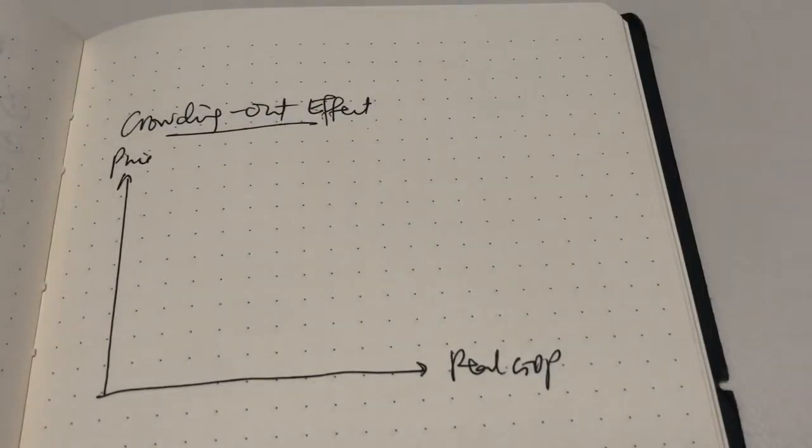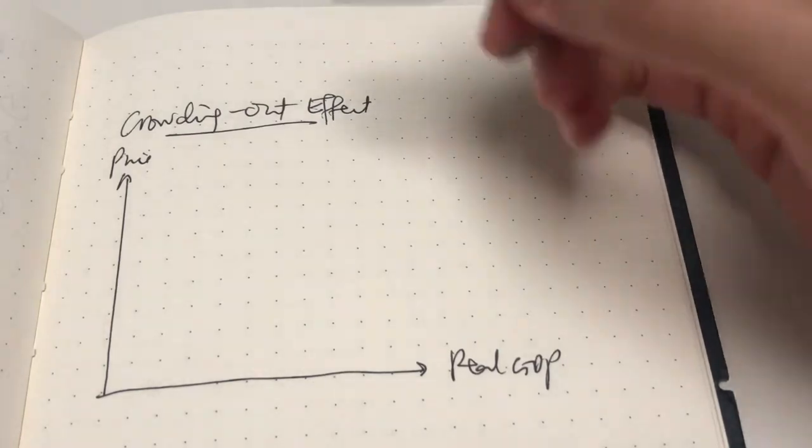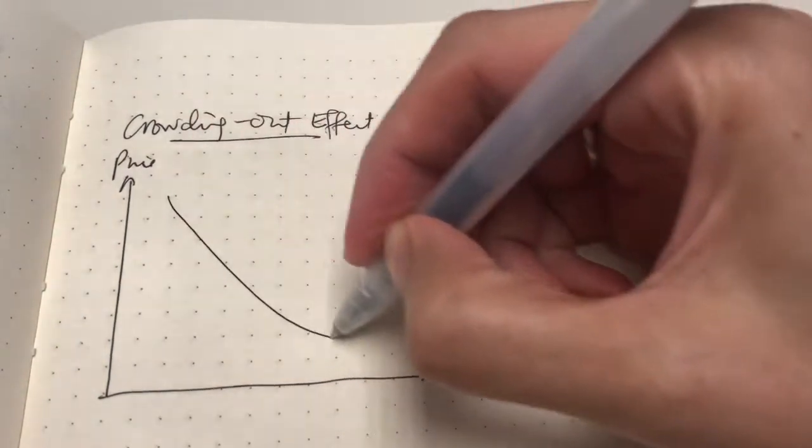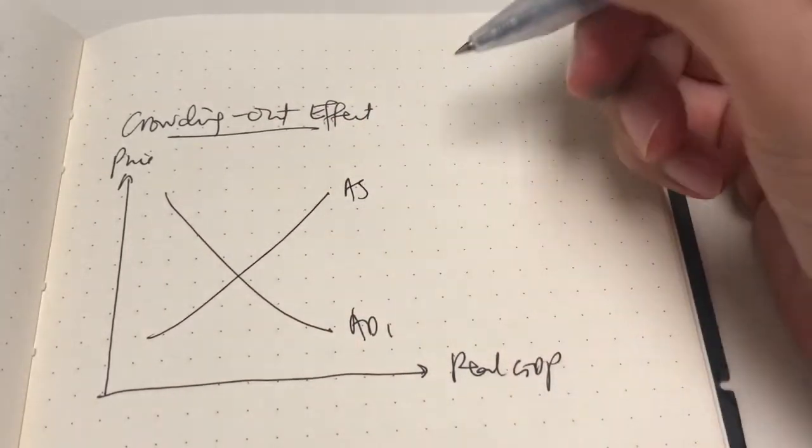Let's take a look at the second problem of fiscal policy, which is known as the crowding out effect. Here, let me just sketch a simple aggregate demand and aggregate supply curve first. So this is AD1 and AS.